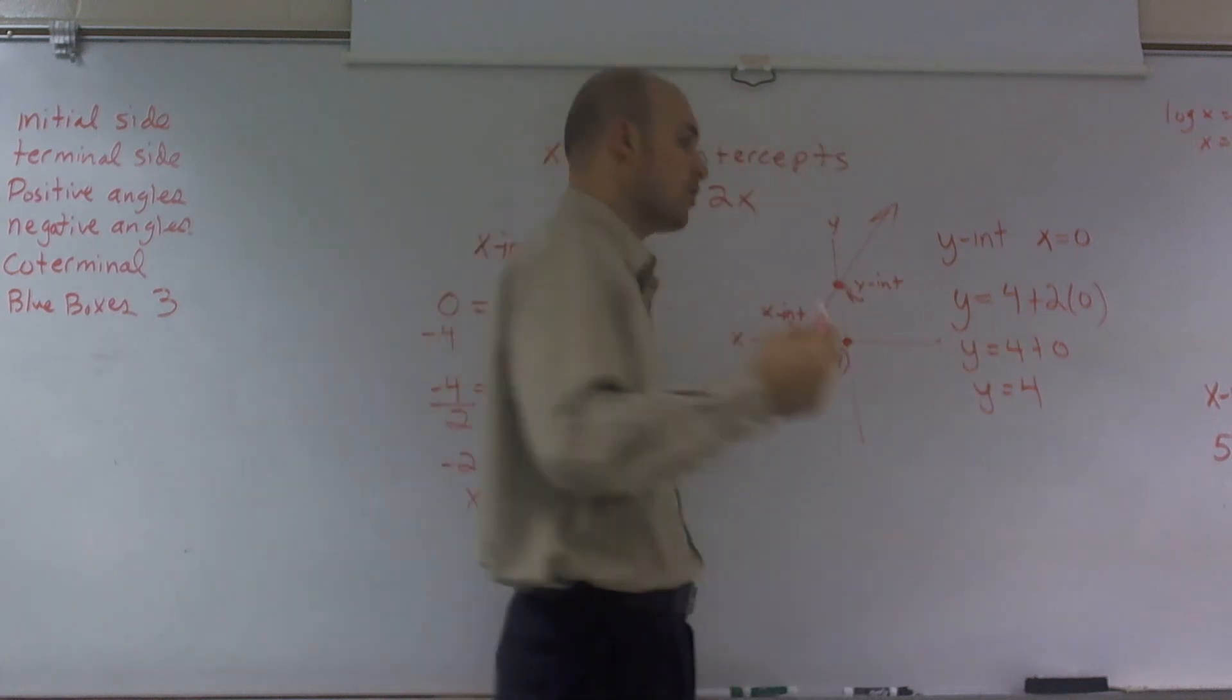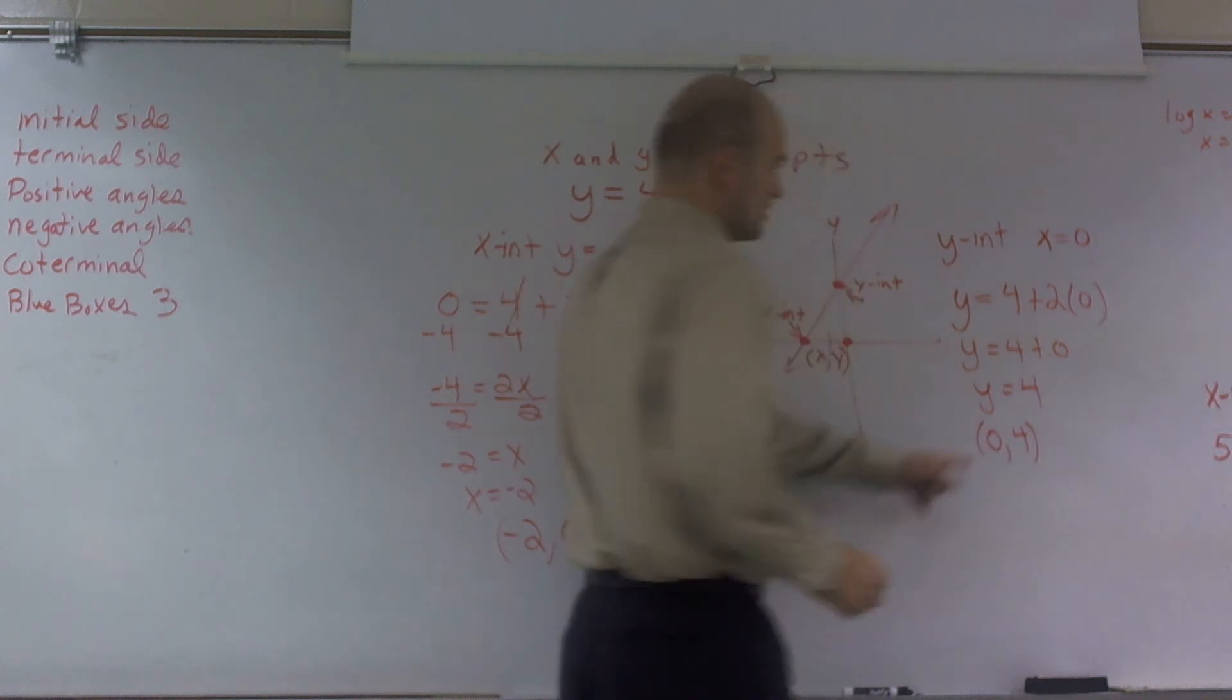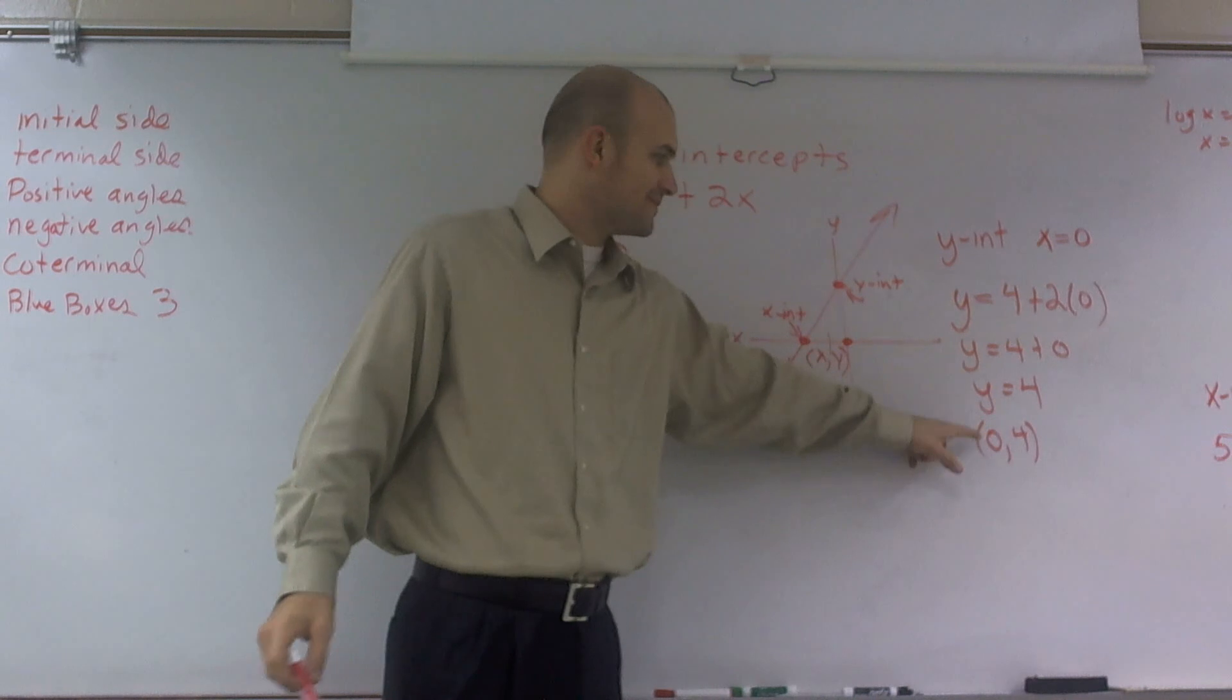So you can say y equals 4, or you can write it as a coordinate point (0, 4), where 0 is your x value, and 4 is your y value.